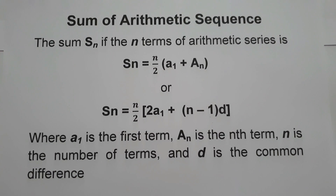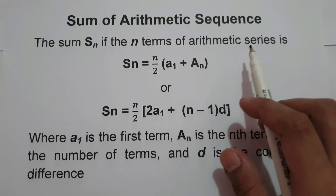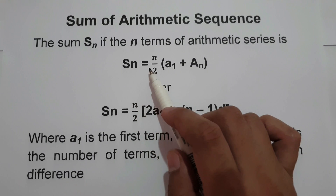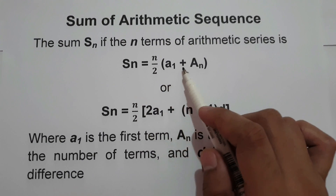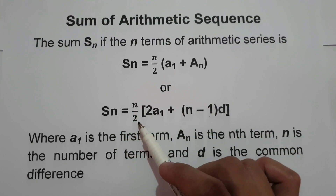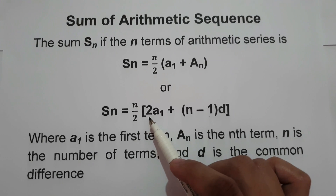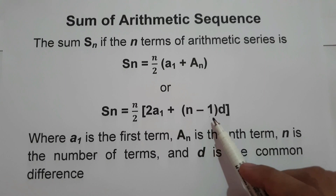For today's video, we are going to talk about how to find the sum of an arithmetic sequence. When we say sum of arithmetic sequence, the sum S sub n — if the nth term of an arithmetic series is S sub n equals n over 2 times the quantity of A sub 1 plus A sub n, or S sub n equals n over 2 times the quantity of 2 times A sub 1 plus n minus 1 times d.